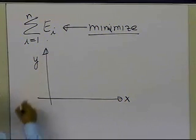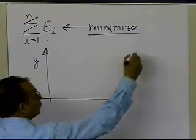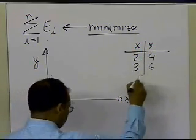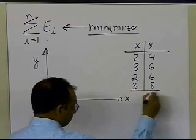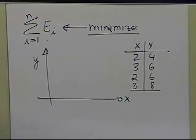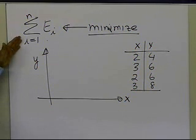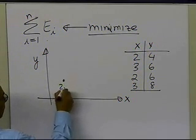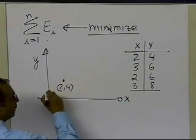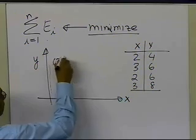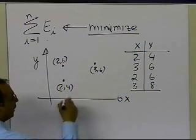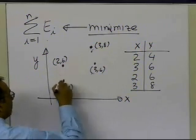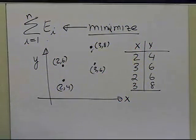Let's see if there is a problem with that criterion by taking an example. Suppose somebody gives you data: at x=2, y=4; at x=3, y=6; at x=2, y=6; and at x=3, y=8. If I plot those four data points and someone says to go ahead and minimize the sum of the residuals, let's examine what happens.